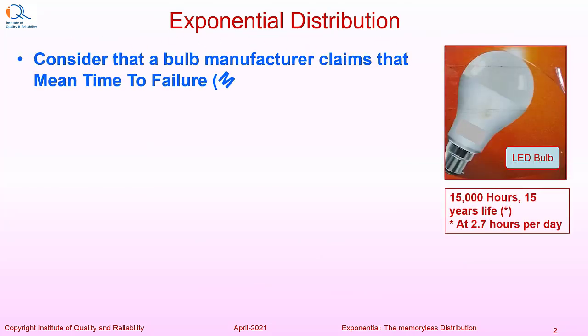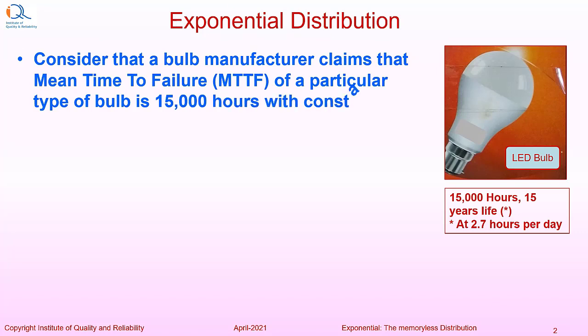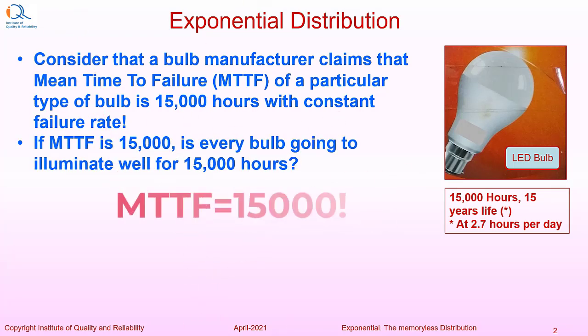Consider that a bulb manufacturer claims that mean time to failure or MTTF of a particular type of bulb is 15,000 hours with constant failure rate. If MTTF is 15,000, is every bulb going to illuminate well for 15,000 hours? That's an interesting question.